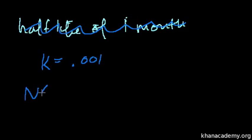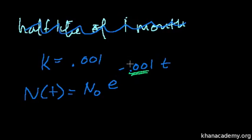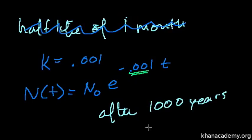So my general formula is N(t) equals N₀ times e to the minus 0.001t. If you had to figure this out from half-life, I did that in the previous video with carbon-14. But let's say this is the formula, and after 1,000 years, I have 500 grams of this element. How much did I start with?